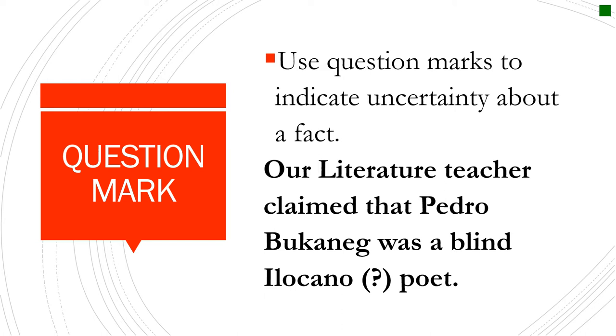Here we have our literature teacher claimed that Pedro Bucaneg was a blind Ilocano poet. Notice that the question mark is enclosed in parentheses because you're not sure whether Pedro Bucaneg is Ilocano, or maybe an Ibanag or an Itawit or Itawis, right? So, you place a question mark there to indicate an uncertainty about that fact.